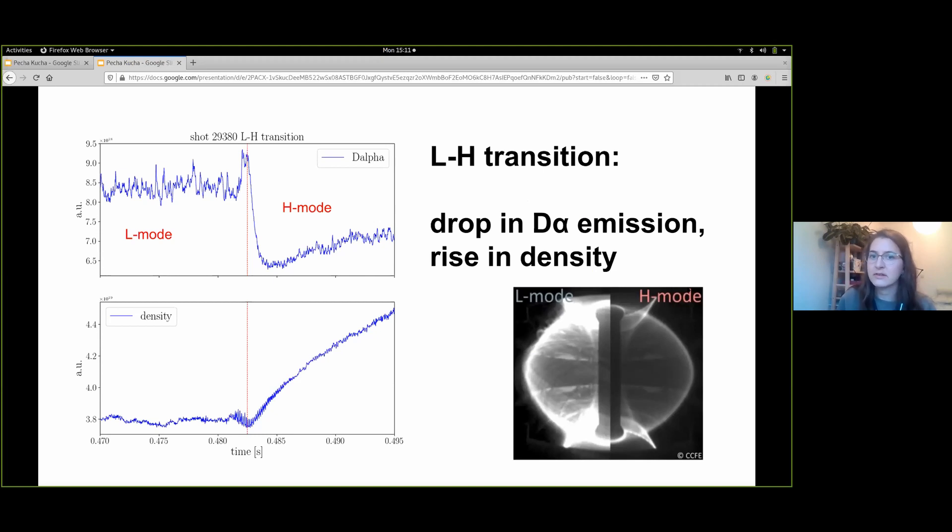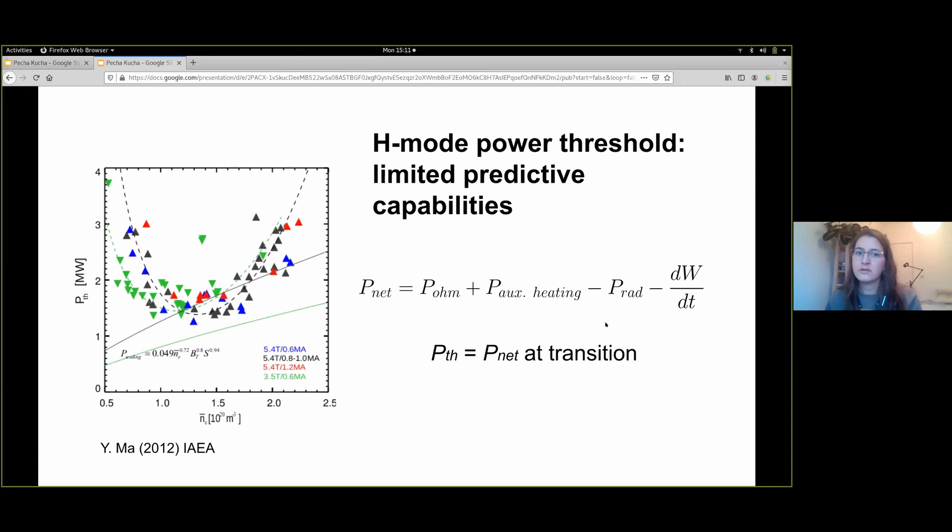Though plasma is mostly confined by the magnetic field, some losses occur through cross-field radial transport. In H-mode, this radial transport is suppressed, leading to a steep rise in density and a characteristic drop in alpha emission, which is typically strongest in the edge.